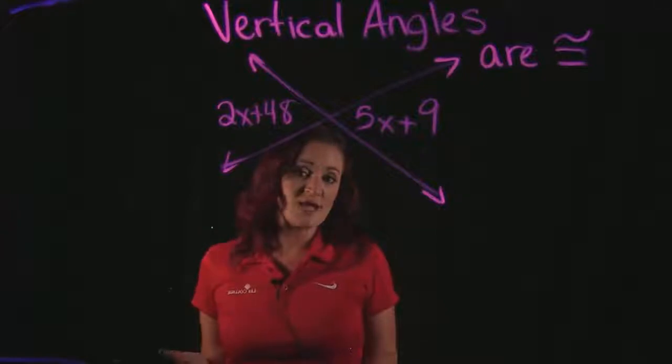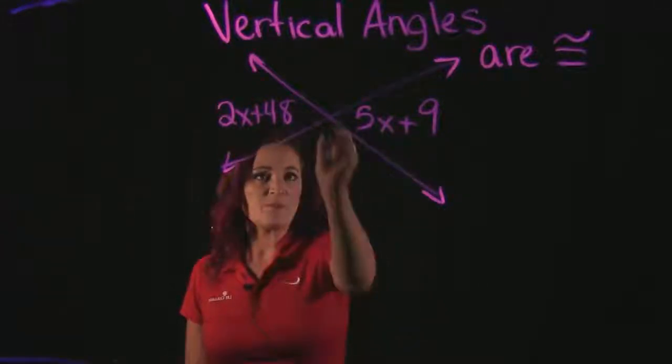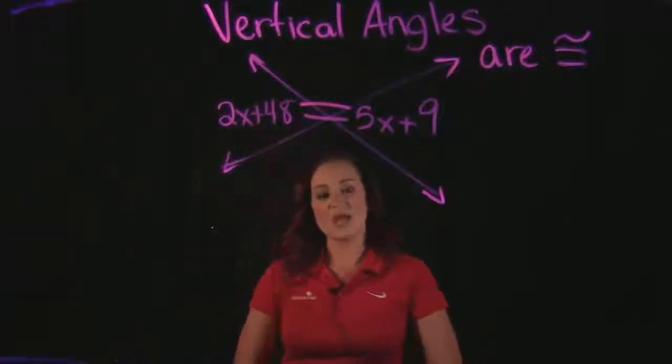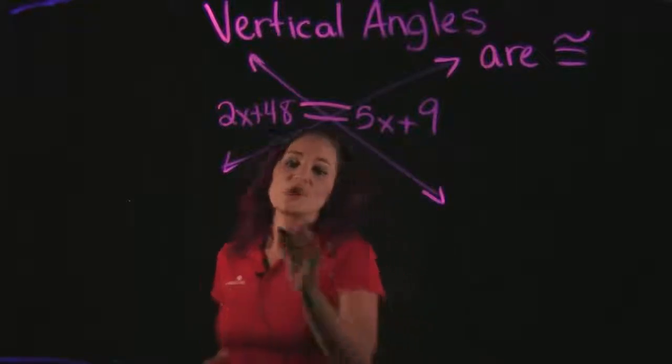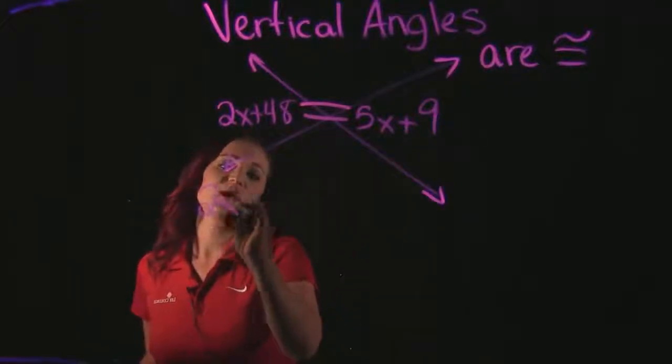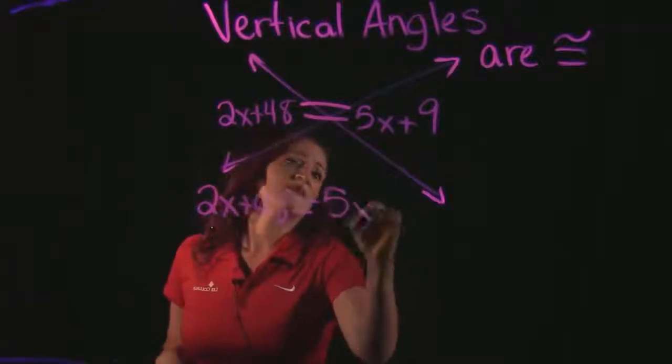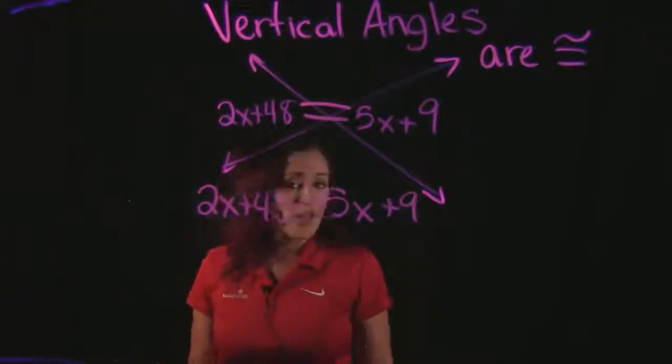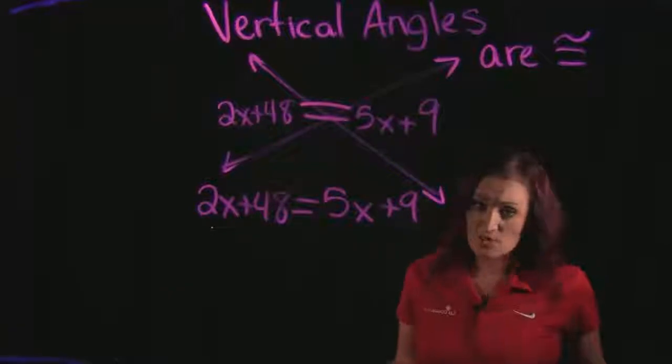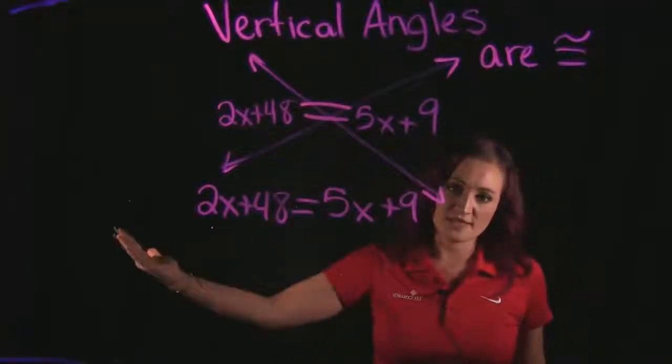So as long as I know that, I can solve this example. That means that these two angles equal each other. So that means that 2x plus 48 is equal to 5x plus 9. All I have to do is set them equal to each other and then solve this equation.